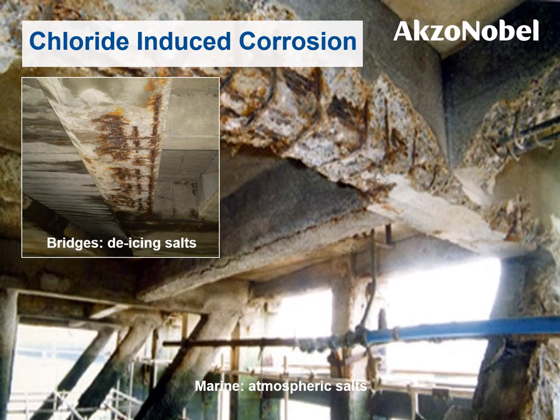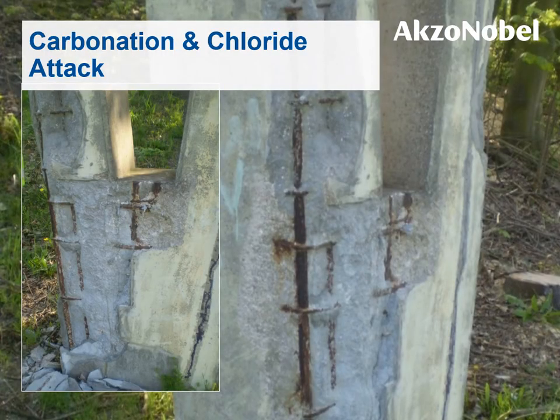Chloride contamination of reinforced concrete can bring about an aggressive form of corrosion, often characterised by some bright orange staining. In the small image to the left, we can see the effect on bridges where washed de-icing salts will cause chloride-induced corrosion. Atmospheric salts are a constant threat to all marine structures. In cooler climates where de-icing salts are used on roads during the winter months, bridge structures are particularly prone to a combination of carbonation and chloride attack, as shown in the photographs on the slide.